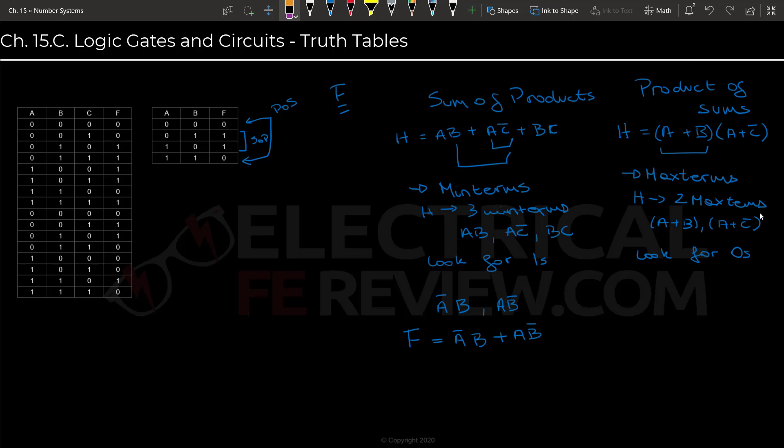So for product of sums, let's look at the first zero. We will have A and B are zeros. So we are just going to have our first maxterm be A or B. Now we're gonna look at our second zero right here. And now we have A and B are both ones. So again, we're counting ones as the complements. So we will have A' or B'. And then for the function, you are just going to multiply those maxterms.